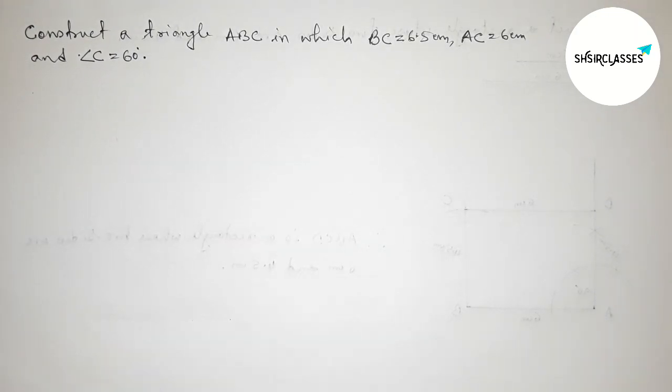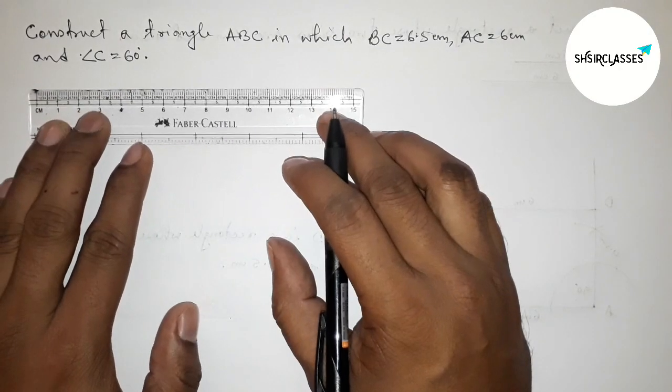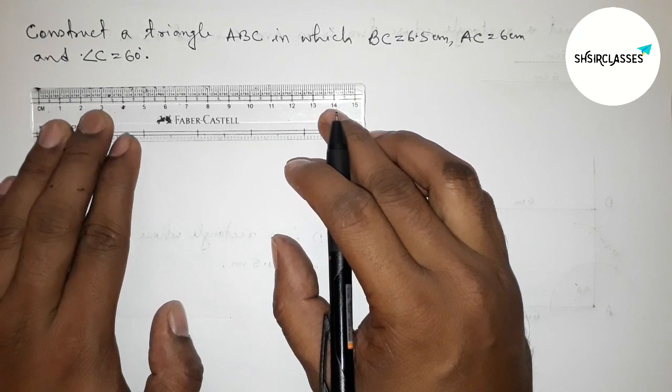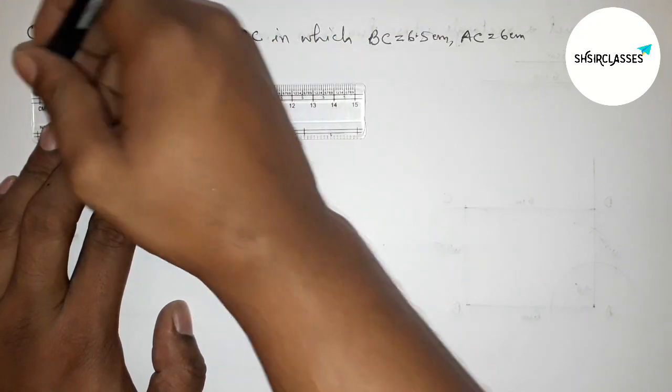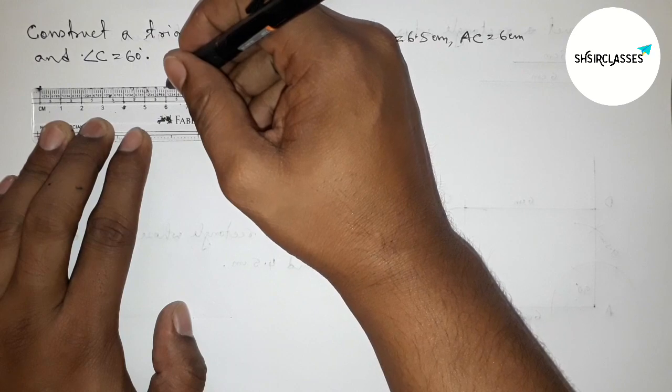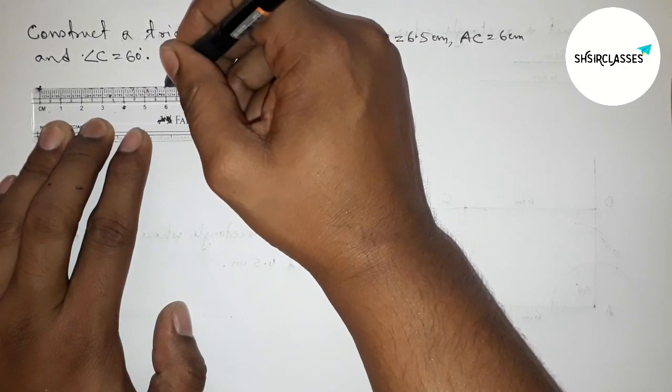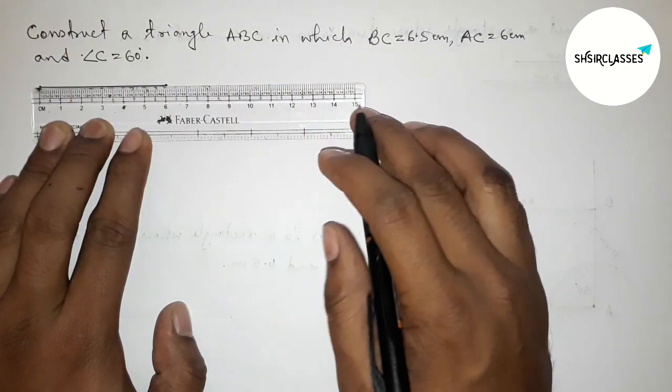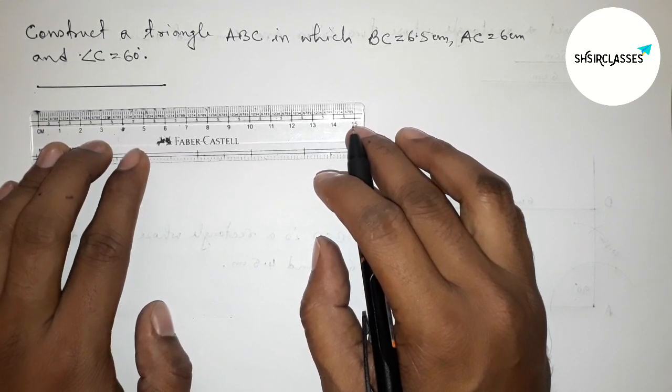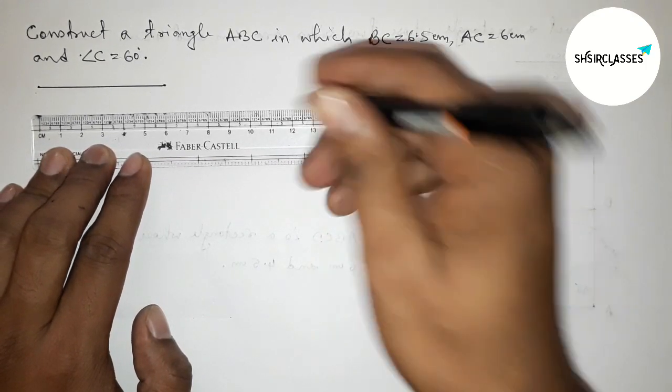So let's start the video. First of all, let us draw here the given two sides. First drawing here 6 centimeters, so this is 6 centimeters. Then drawing another 6.5 centimeter line, so this is 6.5 centimeters.